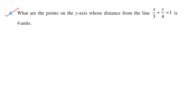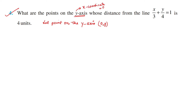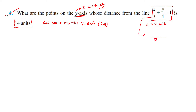Question 4: find the points on the y-axis whose distance from the line is 4 units. If a point is on the y-axis, its x-coordinate is 0, so the point is (0, y). Converting the given line equation by taking LCM 12: we get 4x + 3y - 12 = 0.